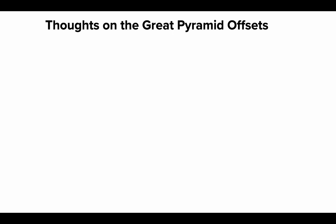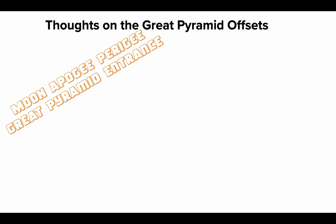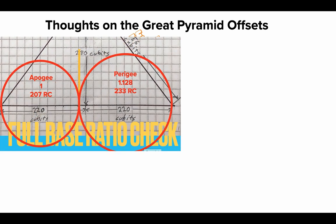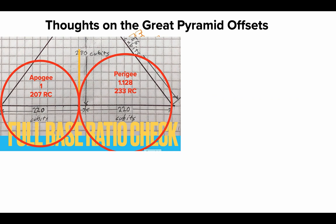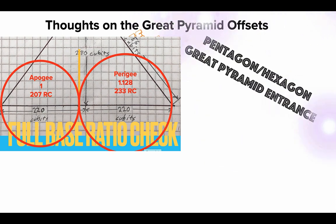Now, thoughts on what we've looked at. Moon apogee and perigee at the original entrance: this has to do with the appearance of the moon. Sometimes it looks bigger, sometimes smaller — it's chimerical. The moon can fool you. This says to me that you have to use judgment, you've got to have some horse sense, look through the illusions and figure things out to be able to find the right way to enter in. The moon is shadowy in its appearances.